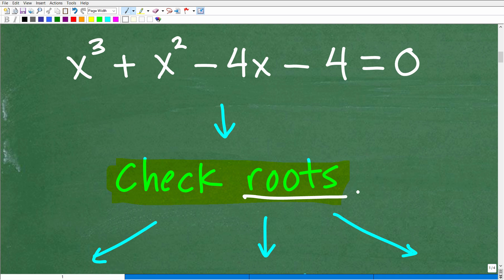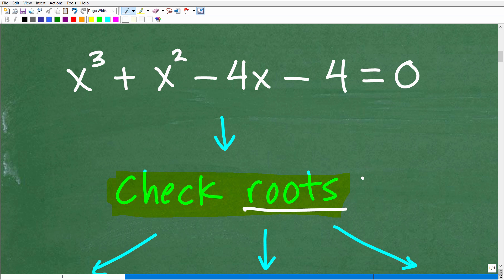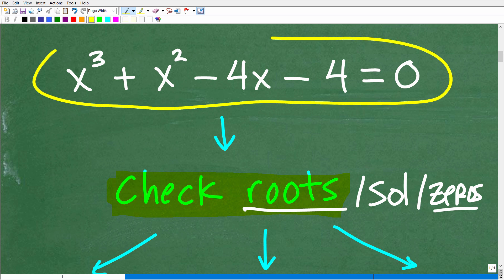So let's go ahead and first talk about how to check roots. Now, again, you might be saying, well, I don't even know what a root is, Mr. Math Man. What is a root? Well, a root is a solution, or what we call a zero. So anytime you think of roots or solutions or zeros, now zeros are kind of x-intercepts. But basically, here we have a polynomial equation, right?